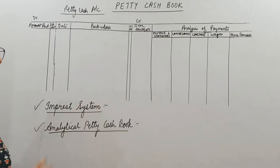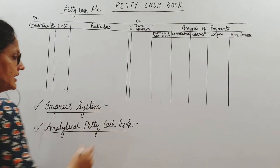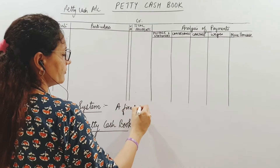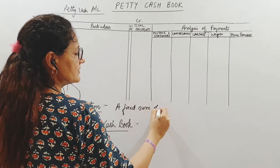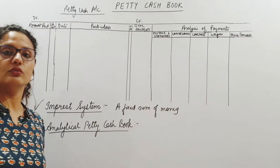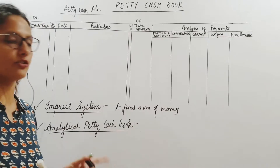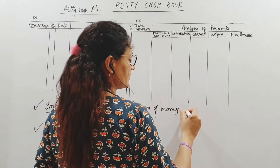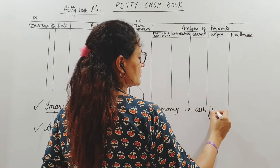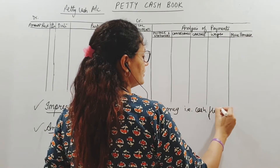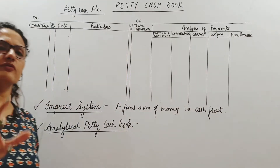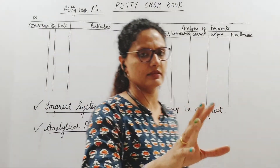The impressed system means a fixed sum of money — called the cash float — is given to the petty cashier. It is a fixed amount which he will get every month.